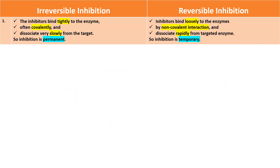In case of irreversible inhibition process, the inhibitors bind tightly to the enzyme, often covalently, and dissociate very slowly from the target. Therefore, this type of inhibition is permanent.